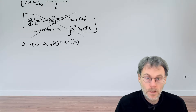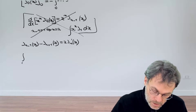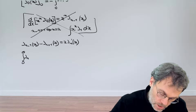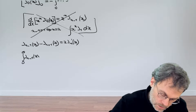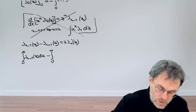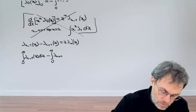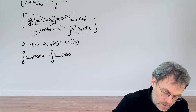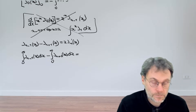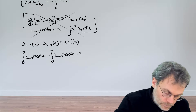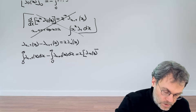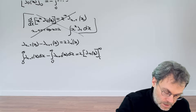Okay, let's get going. Integrating this from 0 to infinity gives us the integral of Jₙ₋₁(x) dx minus the integral from 0 to infinity of Jₙ₊₁(x) dx. And then for the right-hand side we have 2 times Jₙ(x), evaluated between infinity and 0.